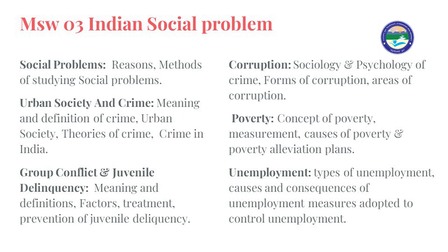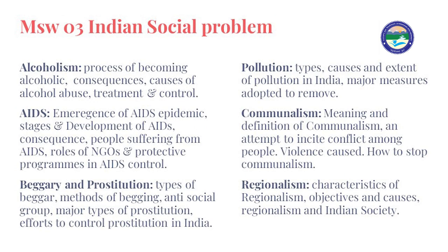The sixth topic is unemployment — causes, consequences, and measures adopted by the government to control unemployment. The seventh topic is alcoholism — the process of becoming alcoholic, causes, consequences, abuse, treatment, and control. The eighth topic is the emergence of AIDS as an epidemic — its stages, development, consequences for people suffering from AIDS, and roles of NGOs and protective programs in AIDS control.